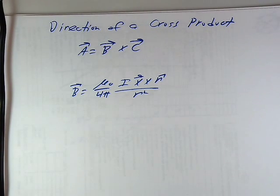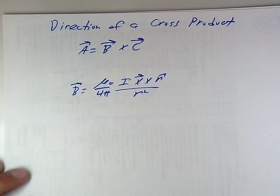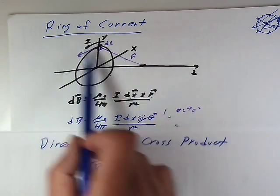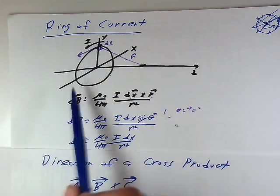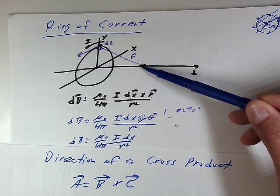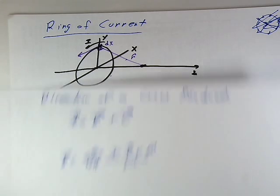In this video, we want to take a detour from our core concept topic and talk about the general direction of a cross product. The reason why we're doing this is we're trying to figure out the direction of the magnetic field in the case of a ring of current. And we need to figure out what arrow we're going to draw through this point here, what magnetic field are we going to draw here. So it's something we got to work on here.